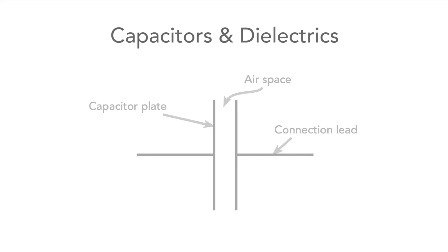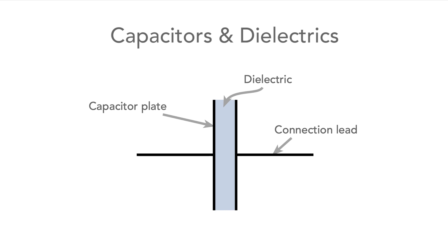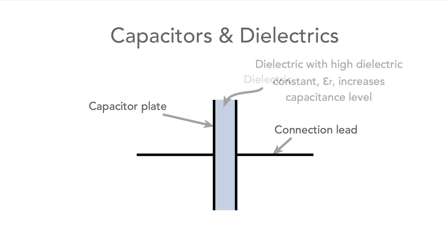One of the major aspects of any capacitor is its dielectric. This is the material that sits between the capacitor plates, and for materials apart from air or free space it enables much higher levels of capacitance to be achieved and it governs other properties as well. This is what we're going to talk about for ceramic capacitors.